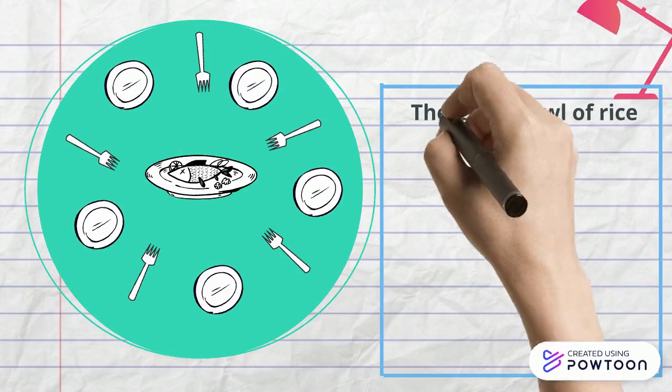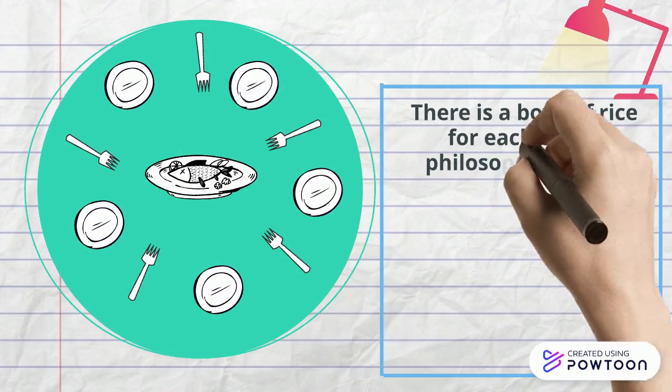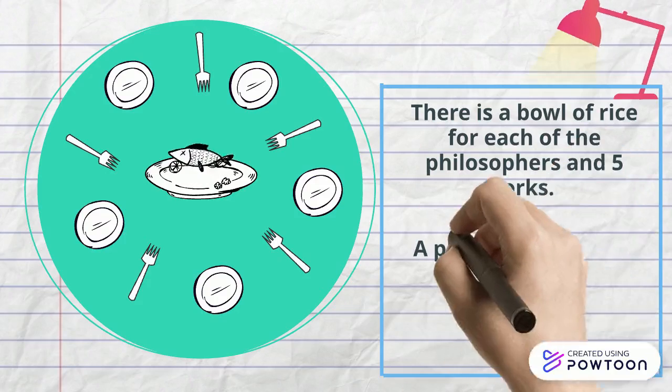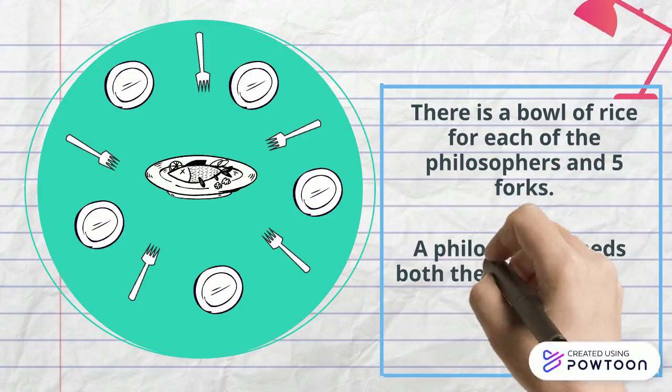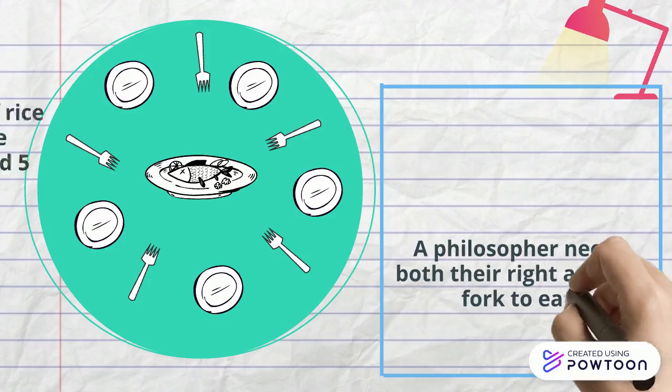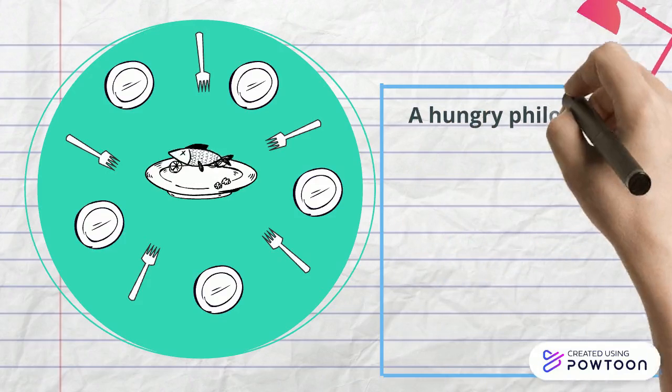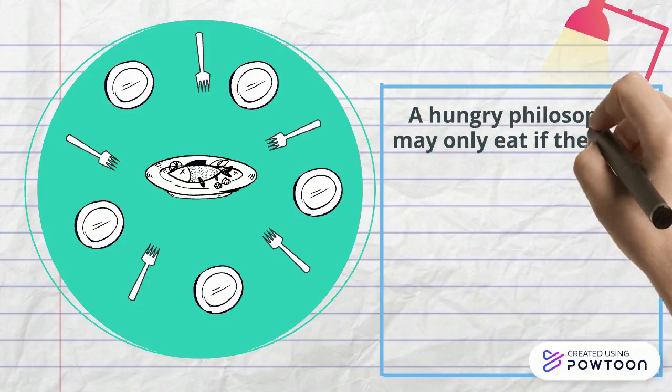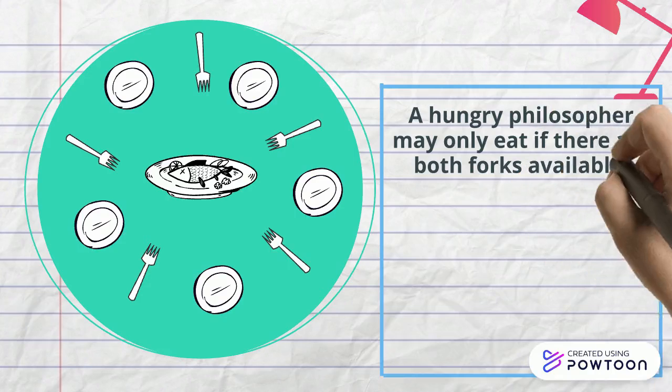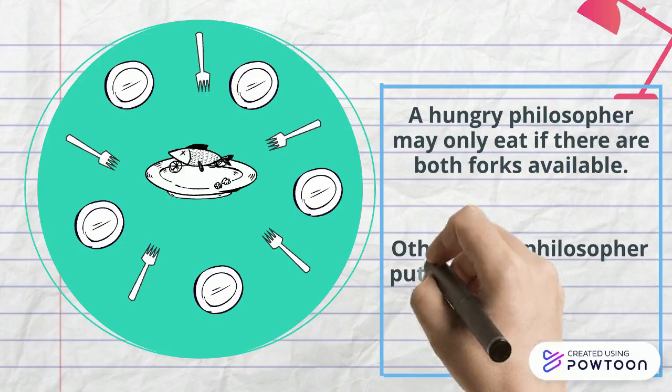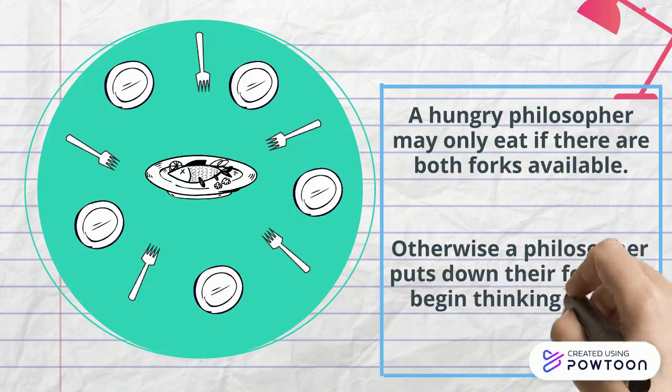There is a bowl of rice for each of the philosophers and five forks. A philosopher needs both their right and left fork to eat. A hungry philosopher may only eat if both forks are available. Otherwise, a philosopher puts down their fork and begins thinking again.